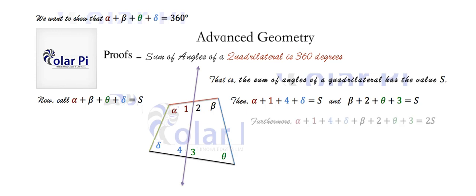Now, we have will imply that alpha plus one plus four plus delta plus beta plus two plus theta plus three is two S. Basically, I've added this to this and that should make two S, right?